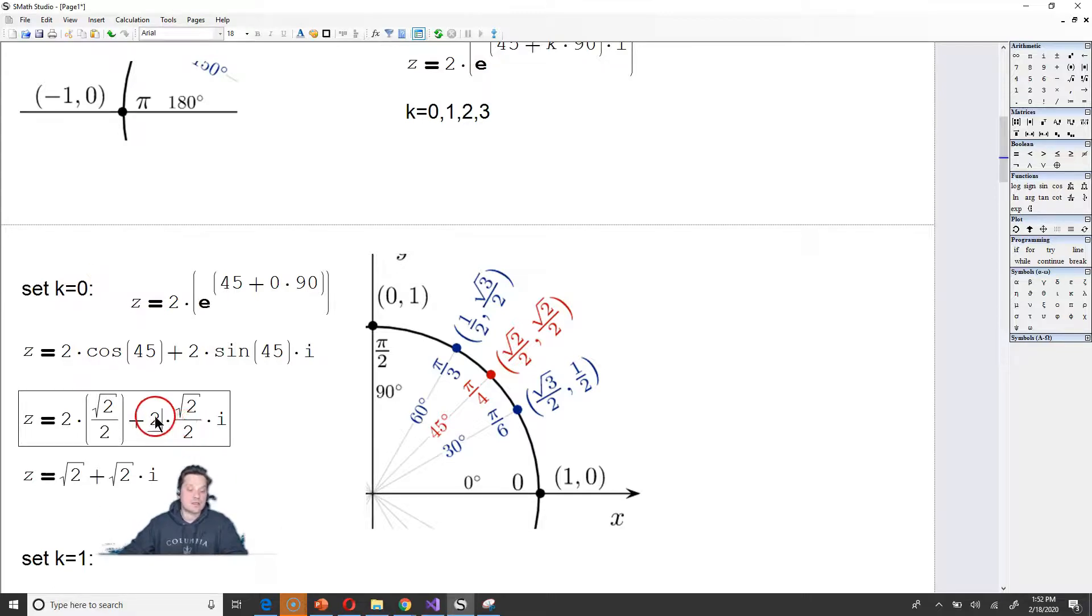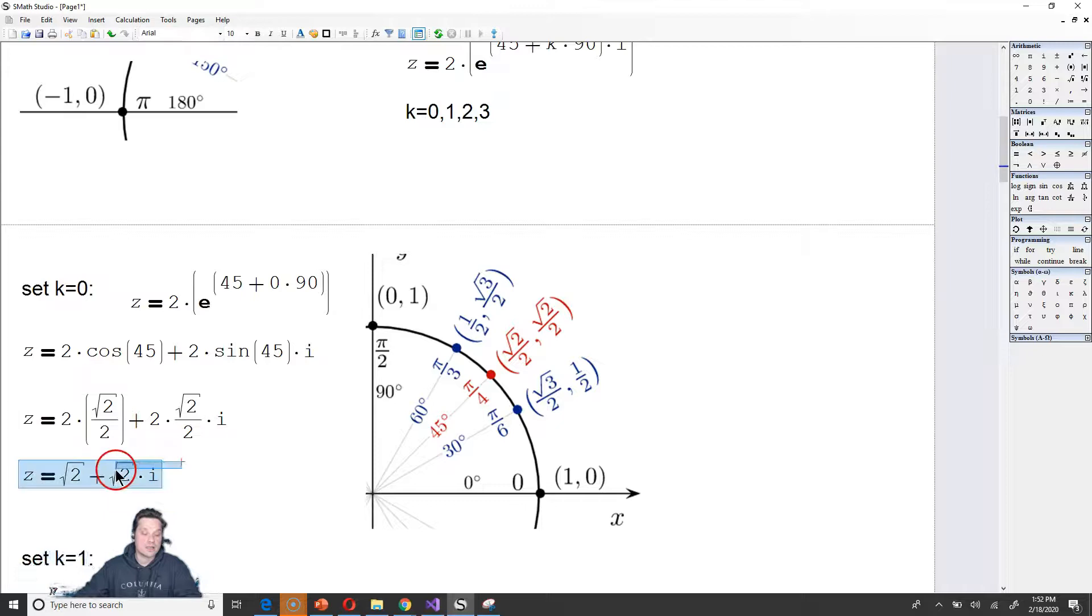Sine of 45 is now 2 times the root of 2 over 2. We're just replacing from the unit circle. Now notice that this cancels, like this one cancels with this one, leaving only the root of 2 in the bottom. And then like this one here cancels with this one, leaving only the root of 2. So the first root then has this shape, z equals the root of 2 plus the root of 2i. Let's continue on to the next stage.